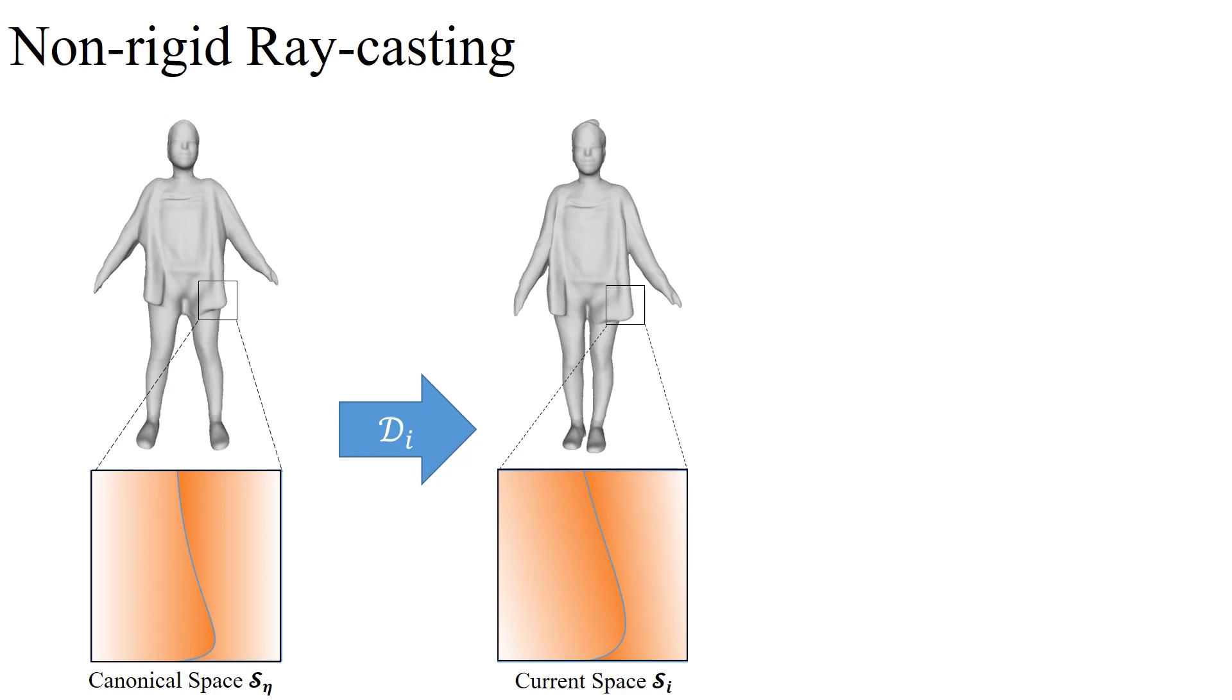For rigid scenes, the sphere tracing algorithm is widely used to find the intersection point of a ray and the SDF surface. However, it is not feasible here due to the forward deformation fields. We propose an efficient optimization algorithm that utilizes the explicit mesh to solve the intersection point.